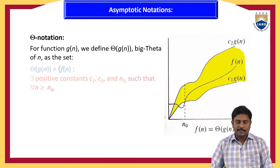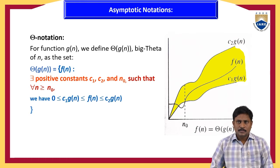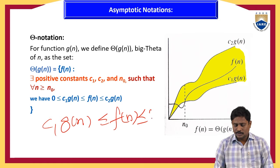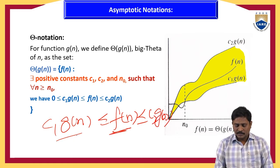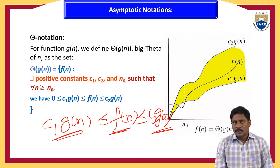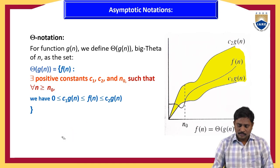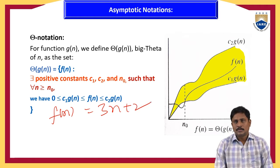Next, another notation is theta notation. In theta notation, c₁·g(n) ≤ f(n) ≤ c₂·g(n). f(n) is the given function, and we find g(n) to satisfy this condition. Theta notation is used to represent average case time complexity. For example, take f(n) = 3n + 2.